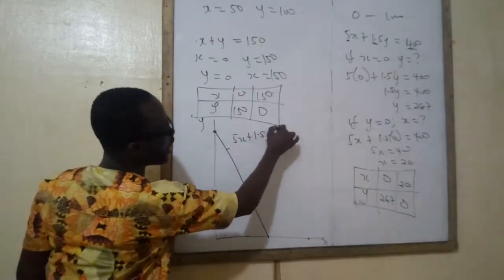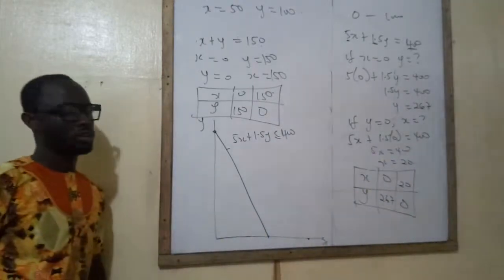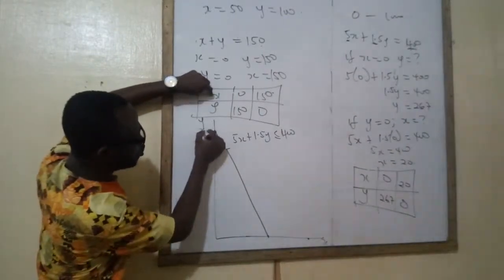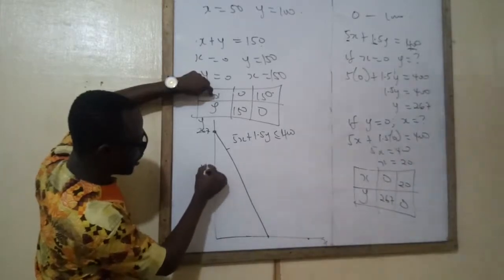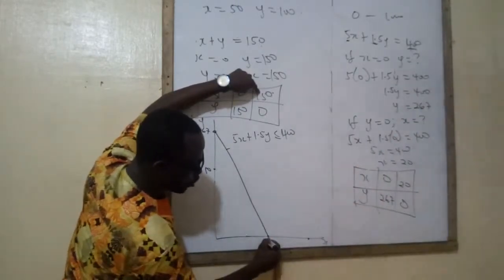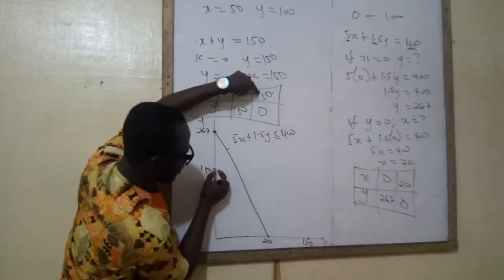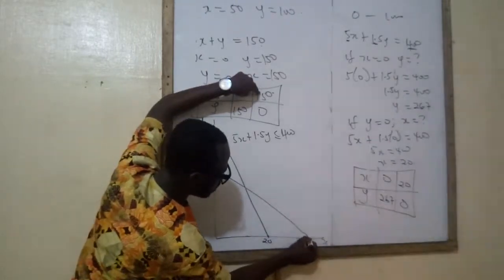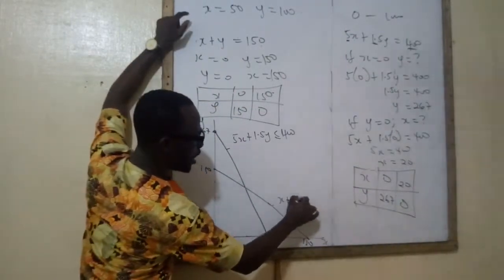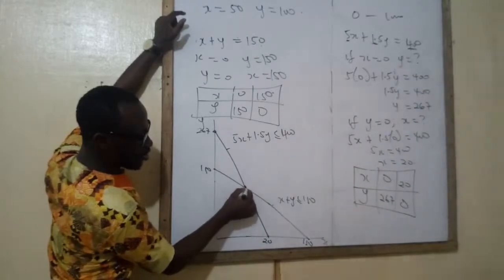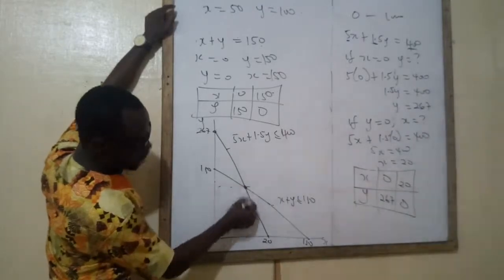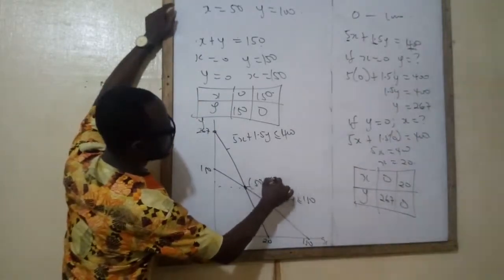We name that equation: 5x plus 1.5y less than or equal to 400. Then the second equation. When x is 0, y is 150. Now remember this was 267, so 150 could be anywhere here. And when x is 150 — remember this is also 20 — so we can put the 150 here. Y is 0. So this equation is x plus y less than or equal to 150. This one is the answer you had. When you read it on the graph, it will be that answer: 50, 100.